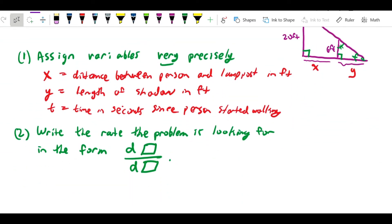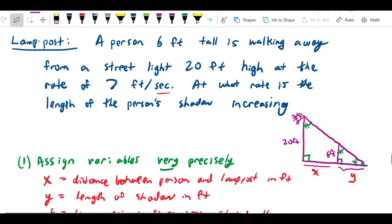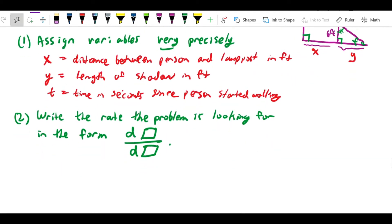Let's first write the rate the problem is looking for. What we're asked is what rate is the length of the person's shadow increasing? So we're asking, since y is the length of the person's shadow, what we're asking for is how fast y is increasing with respect to time. So we're looking for dy over dt.